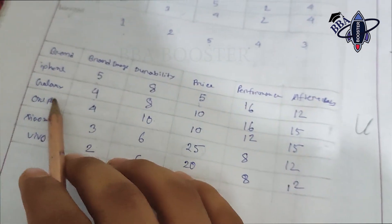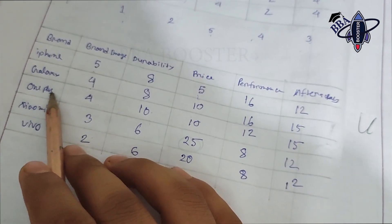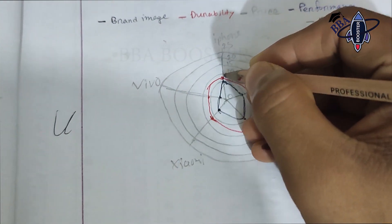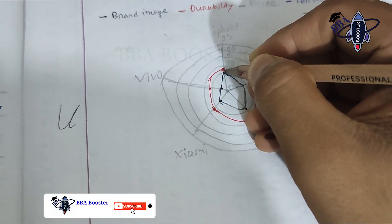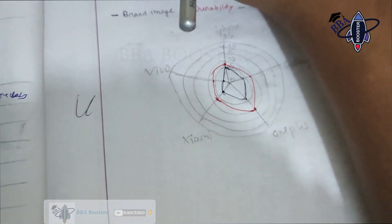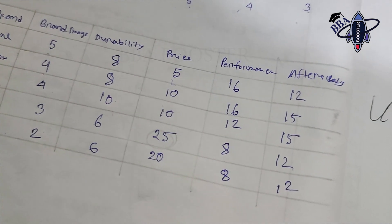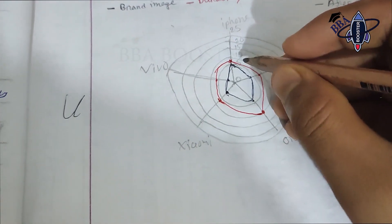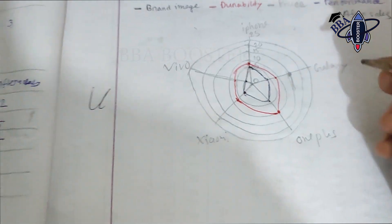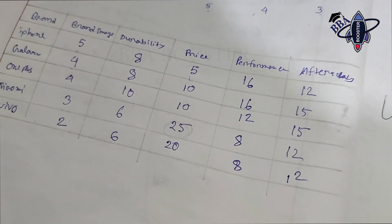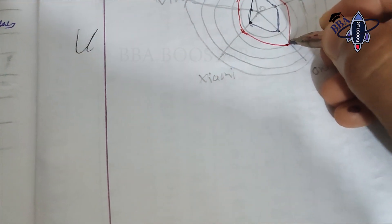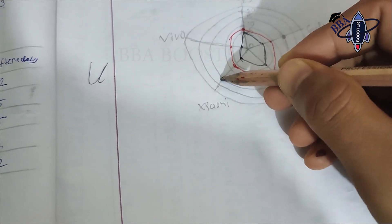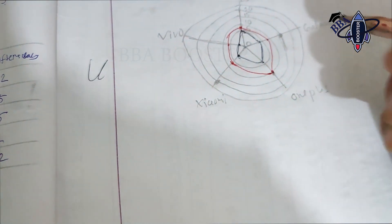For price: iPhone scored 5, Galaxy scored 10, OnePlus scored 10, Xiaomi scored 25, and Vivo also around 25. Price is the highest-weighted feature, so these scores have a significant impact on the overall weighted totals.